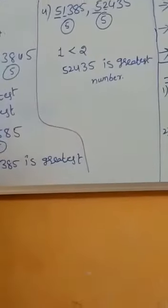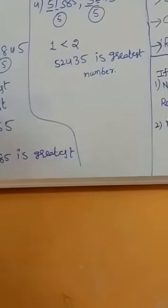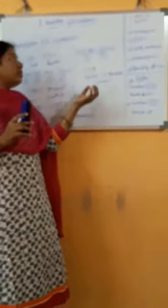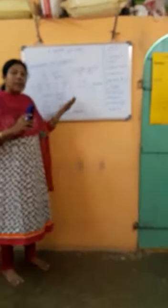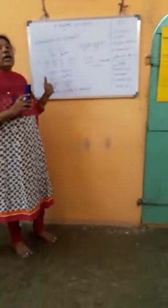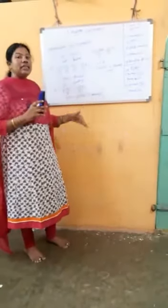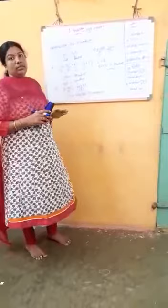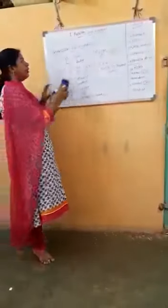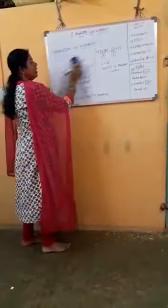So, if the number of digits are the same, then we check place values. If the 10,000 place value is the same, we move to the next place — the 1,000 place. If the 1,000 place is also the same, we move to the 100 place, and so on. That is how we compare large numbers. Do you understand, children?